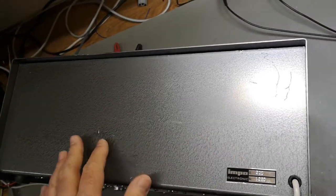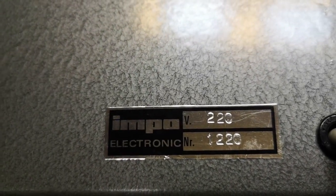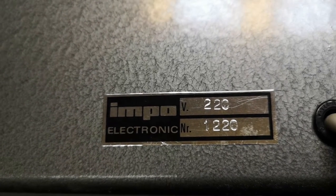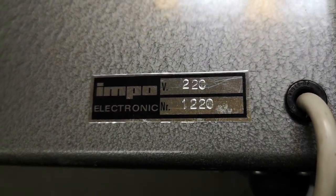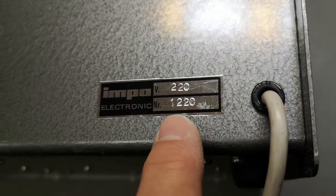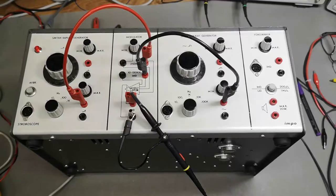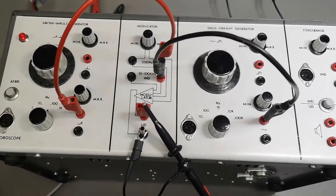The backside, there's nothing except this IMPO Electronic. Voltage is 220. Is this just a serial number? I would expect this is just a serial number, so this is not the type number. So it is powered up and it actually works.